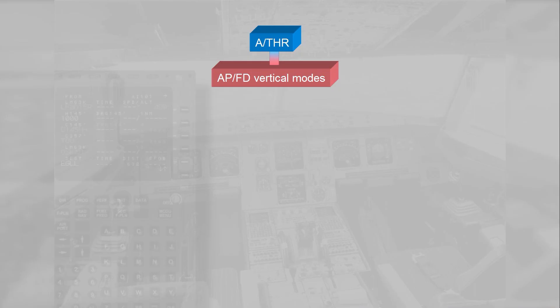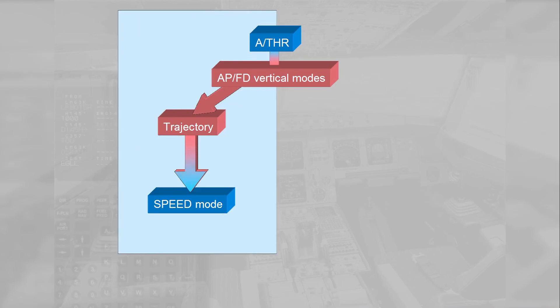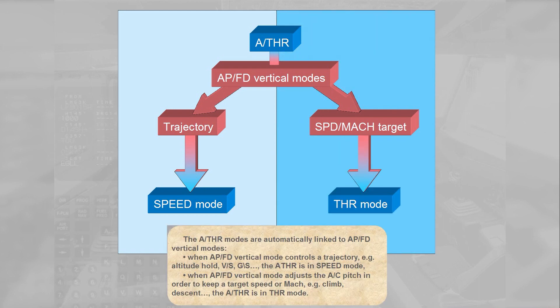The autothrust modes are automatically linked to autopilot flight director vertical modes. When the autopilot flight director vertical mode controls a trajectory — e.g. altitude hold, vertical speed, glide slope — the autothrust is in speed mode. When the autopilot flight director vertical mode adjusts the aircraft pitch in order to keep a target speed or Mach — e.g. climb or descent — the autothrust is in thrust mode.